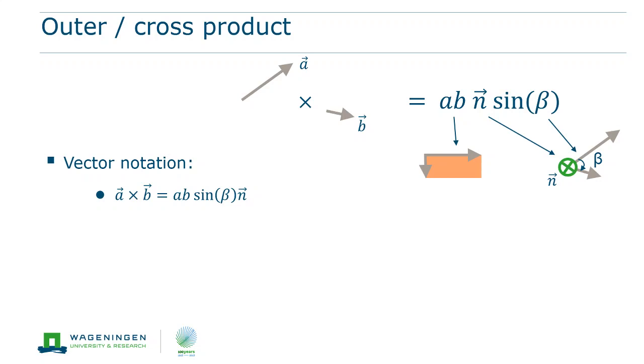But the outer product also has a direction, it is a vector. This vector is perpendicular to the plane in which vectors a and b are located, and it points into the direction defined by the corkscrew rule or the right-hand rule. In this case, when turning from a to b, the direction is away from the observer.